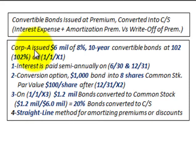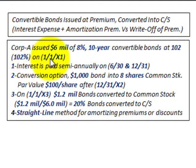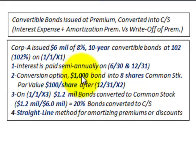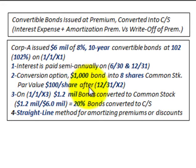For example, Corporation A issued $6 million in bonds at an 8% interest rate per year. They're going to be 10-year convertible bonds issued at 102% of par on 11X1. The interest is paid semi-annually on 6/30 and 12/31 each year. Each bondholder holding a $1,000 bond can convert it into 8 shares of common stock, which has a par value of $100 per share.